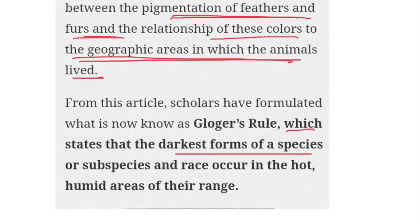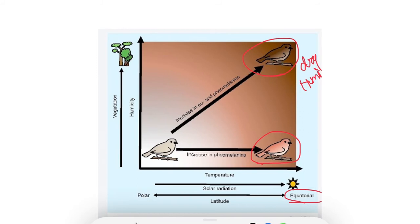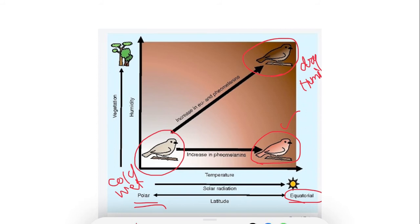Birds present towards the equatorial region, where humidity is high, have increased pigmentation — they are heavily pigmented and their color is darker in comparison to those species present in the cold and wet environment near the polar region. Those in the dry-humid region have more pigmentation and darker skin color compared to species in the cold, wet climate.